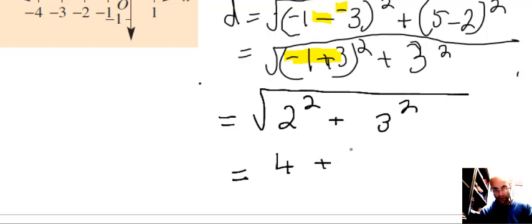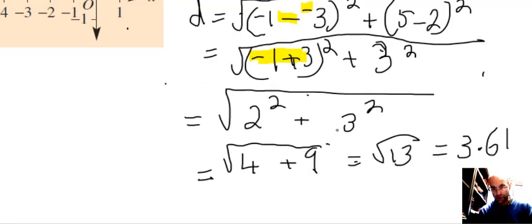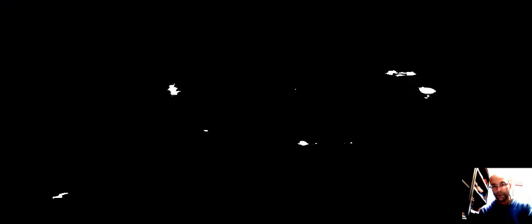And 2 squared is 4, 3 squared is 9, 4 and 9 is 13, the square root of 13. Using a calculator you get an approximation, it is about 3.61. So let's try some of the proper distance formula now.